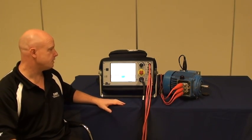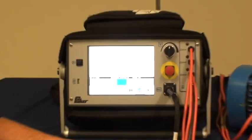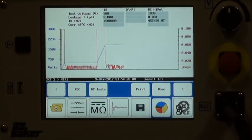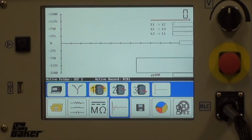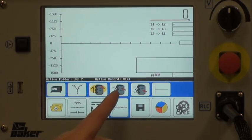Now we need to move from the DC test screen to the surge test screen. To do this, we simply activate the surge button, and as you can see, we now have three lead buttons.